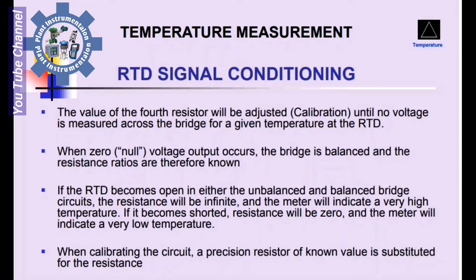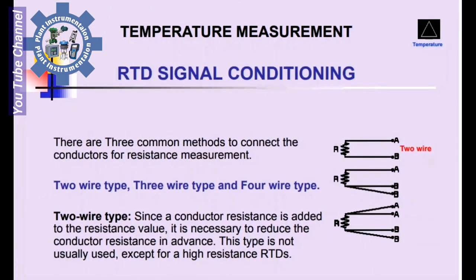If the RTD becomes open in either the unbalanced or balanced bridge circuits, the resistance will be infinity and the meter will indicate a very high temperature. If it becomes shorted, the resistance will be zero and the meter will indicate a very low temperature. When calibrating the circuit, a precision resistance of known value is substituted for the RTD.